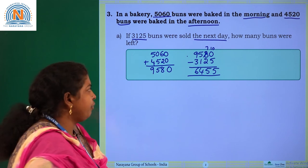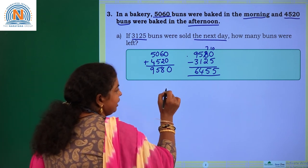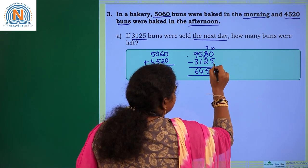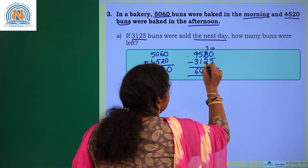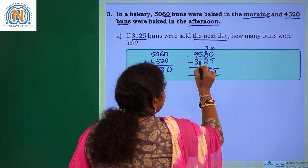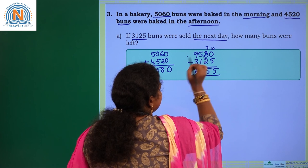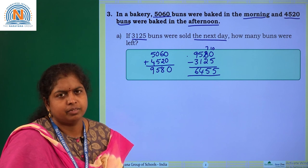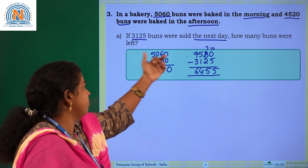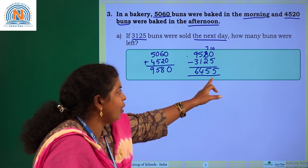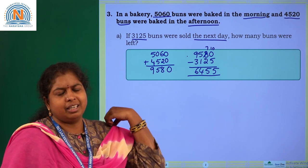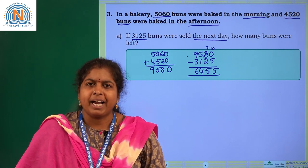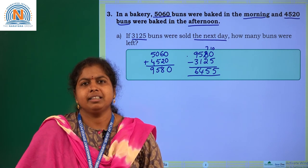If you want to check whether you did it correctly, add 6455 and 3125: 5 plus 5 is 10, 5 plus 2 plus 1 is 8, 4 plus 1 is 5, and 6 plus 3 is 9. So you get 9580 again — your answer is correct. How many buns were left? 6455 buns were left. Do practice at home children. Hope you understood the session. Thank you.